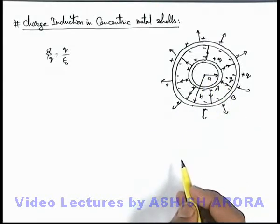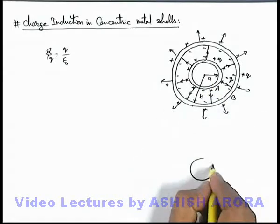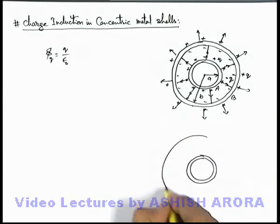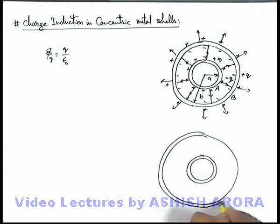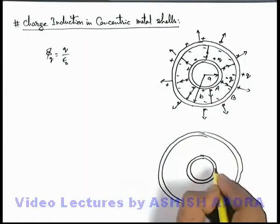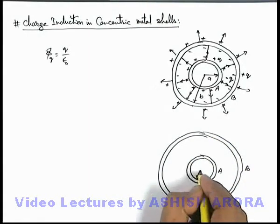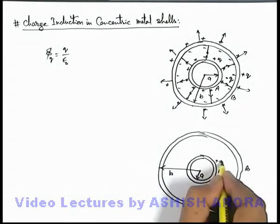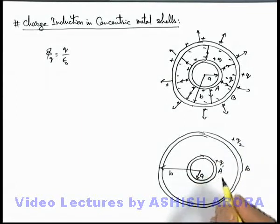A similar concept we can discuss in a different situation when both shells are given charges. Consider a situation when again there are 2 concentric metal shells A and B of radii a and b. A charge +Q1 is given to the inner shell and +Q2 is given to the outer shell.